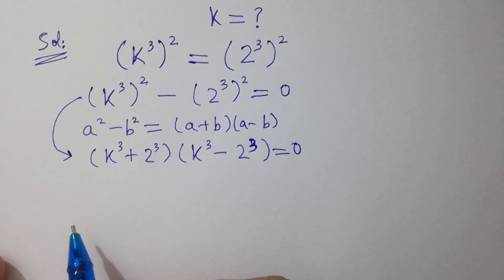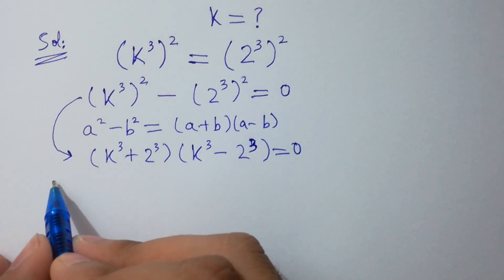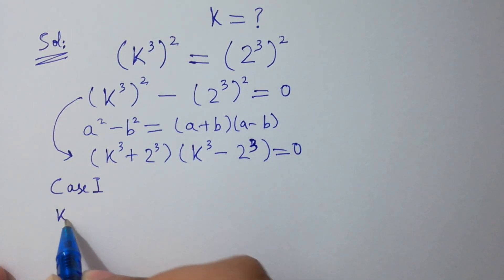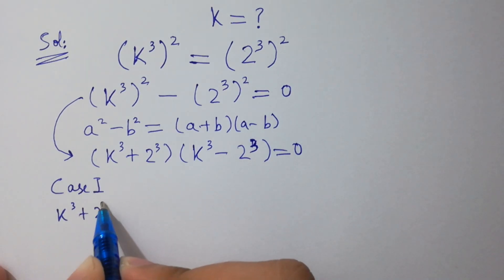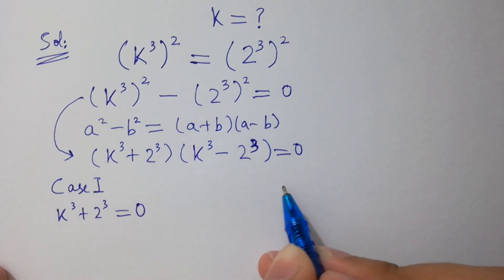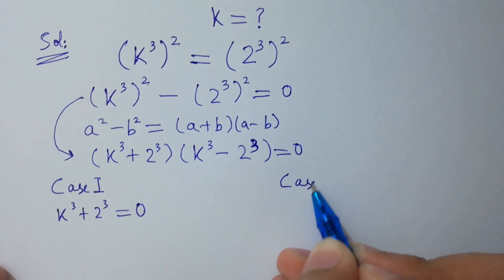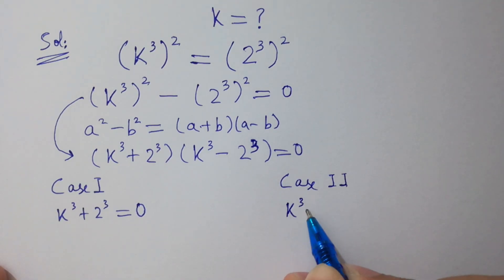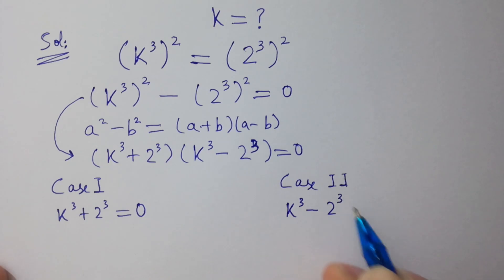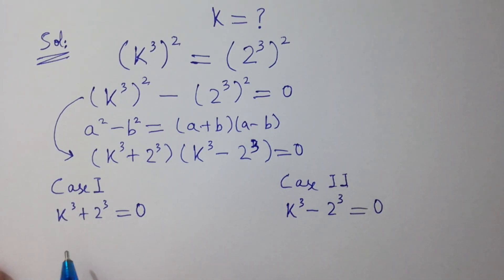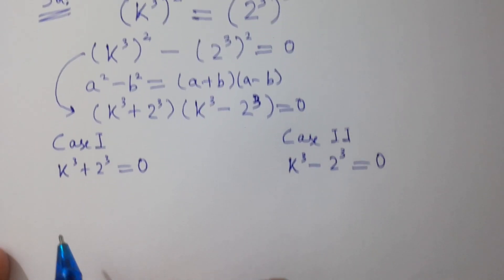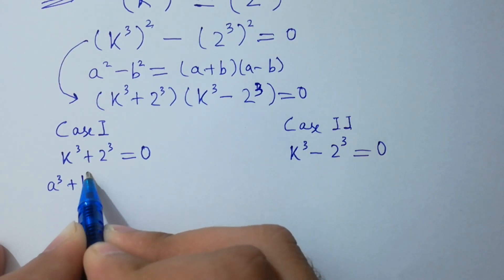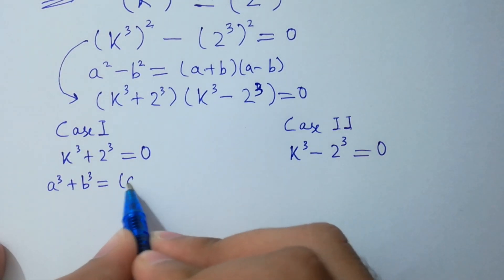So we have two cases. Case 1: k cubed plus 2 cubed equals 0. Case 2: k cubed minus 2 cubed equals 0.